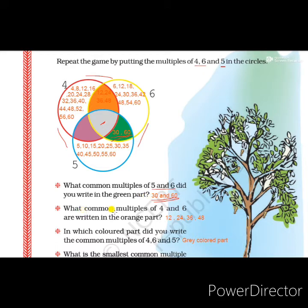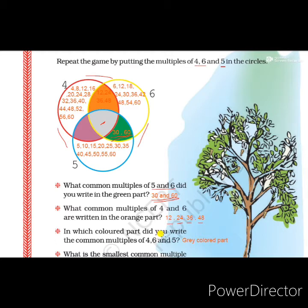The next question is: what common multiples of 4 and 6 are written in the orange part? Finding multiples of 4 and 6, we get 12, 24, 36, and 48 as common multiples. So the answer to write in the orange part is 12, 24, 36, and 48 — these are the common multiples of 4 and 6.